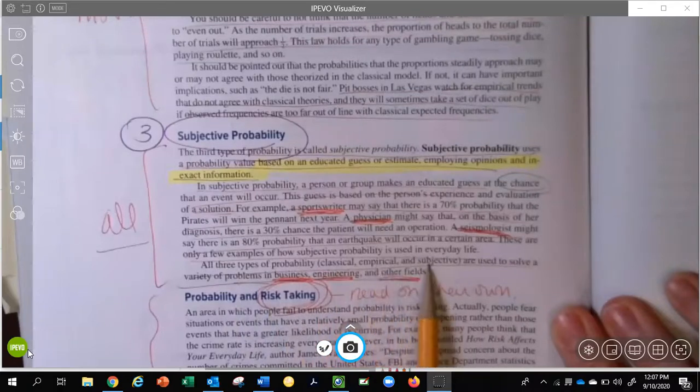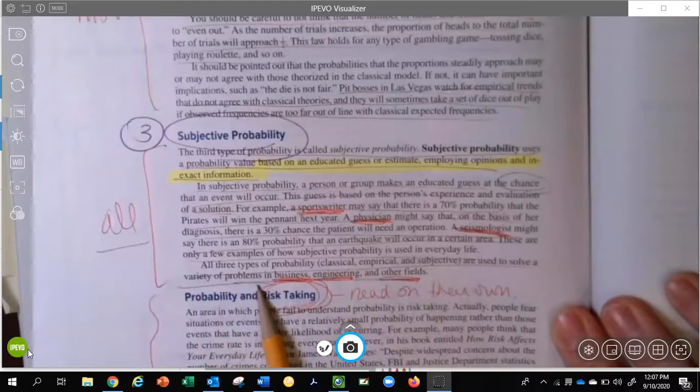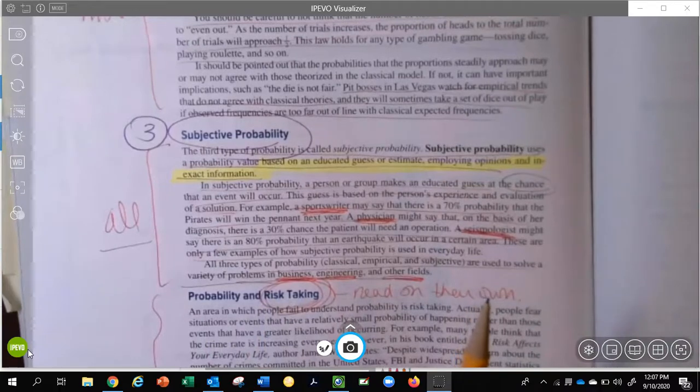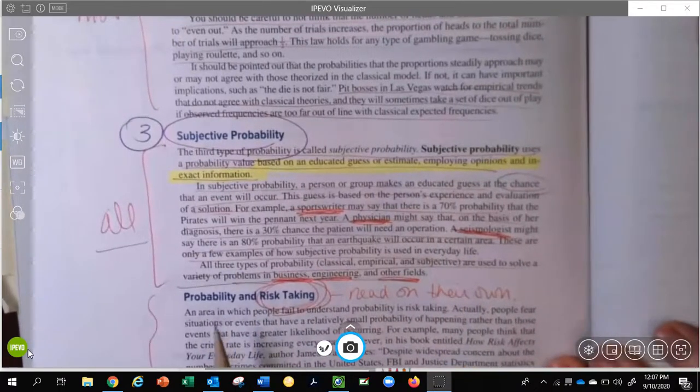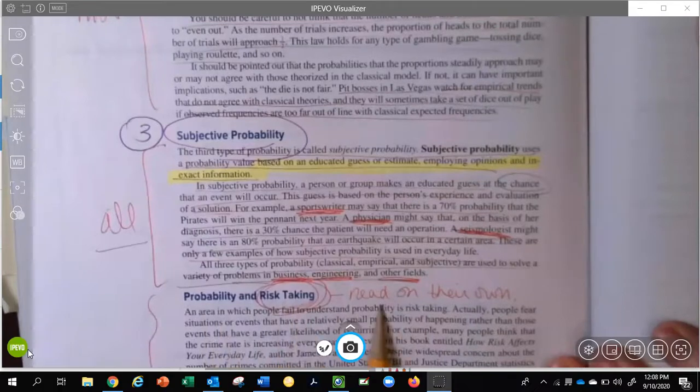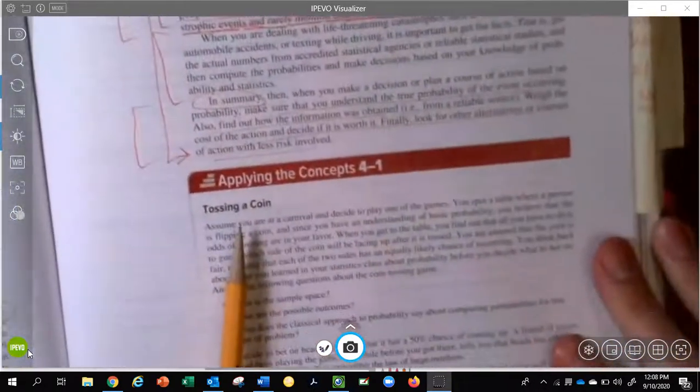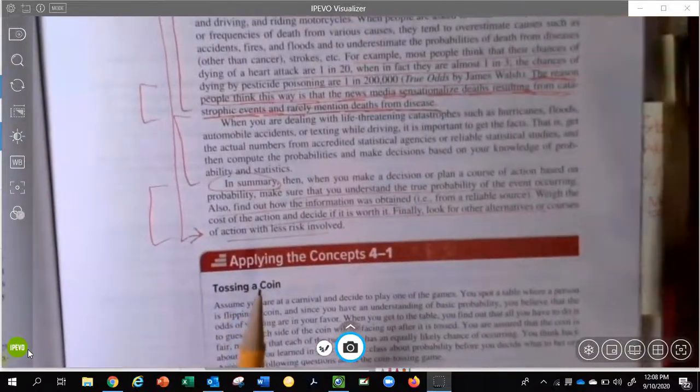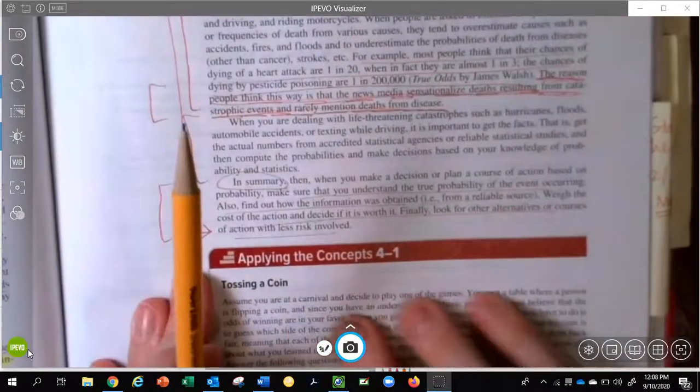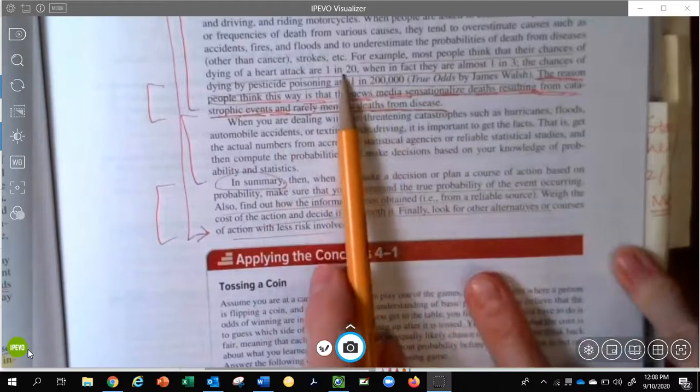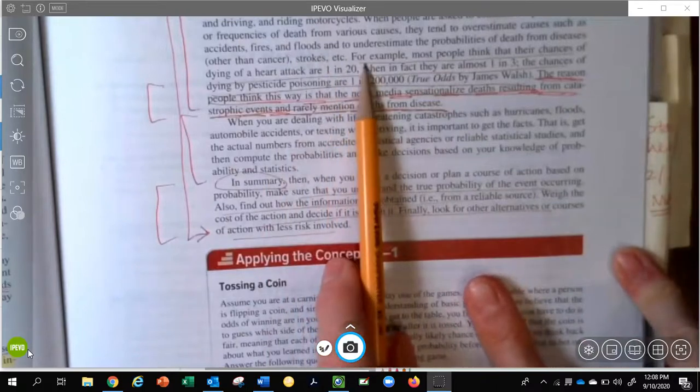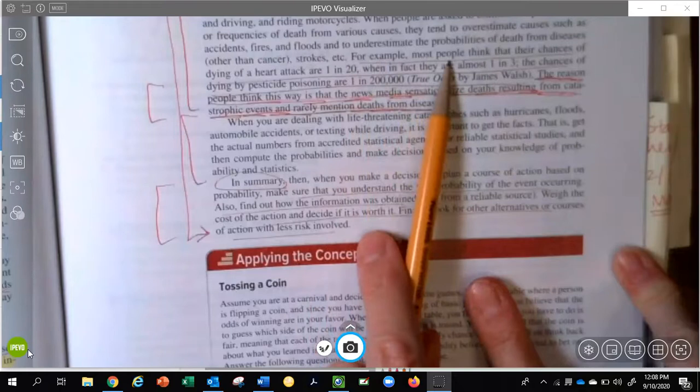All three types of probability, classical, empirical, and subjective, are used to solve a variety of problems in business, engineering, and other fields. I would like for you to read the probability and risk-taking on your own. But I do want to go on to page 205 and finish up our chapter, or our section in our chapter. I can't get that right in the video. And we are in chapter 4, we are in section 1, right here, for example.